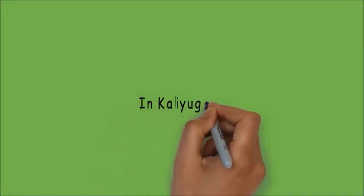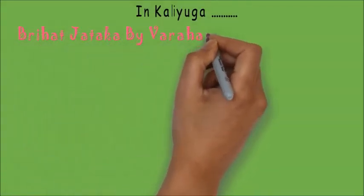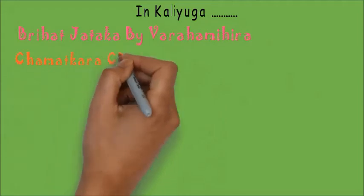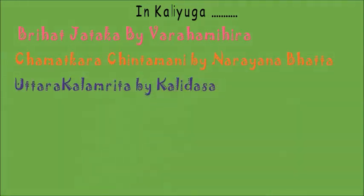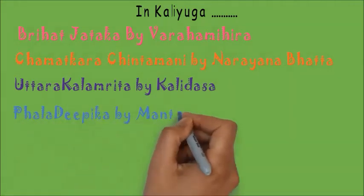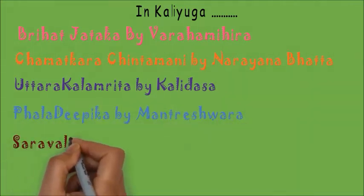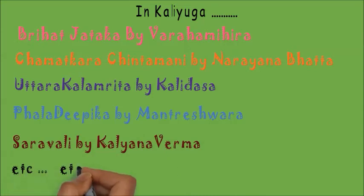Later in Kaliyuga, many small books were written on Jyotishya like Brihat Jataka by Varahamihira, Chamatkara Chintamani by Narayanabhatta, Uttarakalamrita by Kalidasa, Phaladipika by Mantreshwara, Saravali by Kalyanavarma, etc.